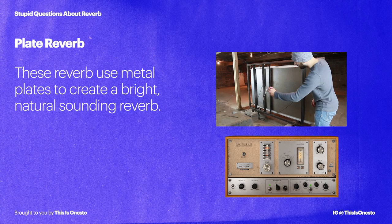Our last reverb to talk about is plate reverb. The way these work is that you have a giant metallic plate, an audio signal is fed into it, and then the echo from the vibrating plate is picked up from an output transducer. The result is a bright and natural-sounding reverb, and because of that they like to be paired with vocals, snare drums, and other percussive elements that need some colorful yet clean-sounding reverb.